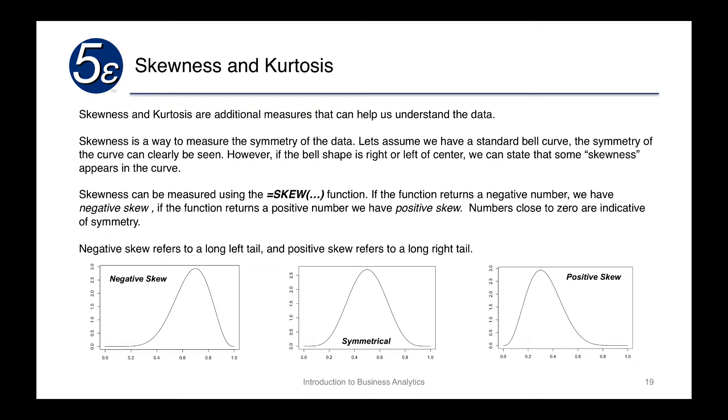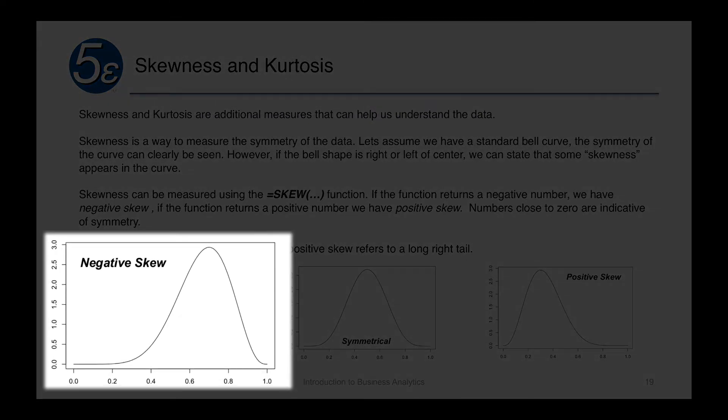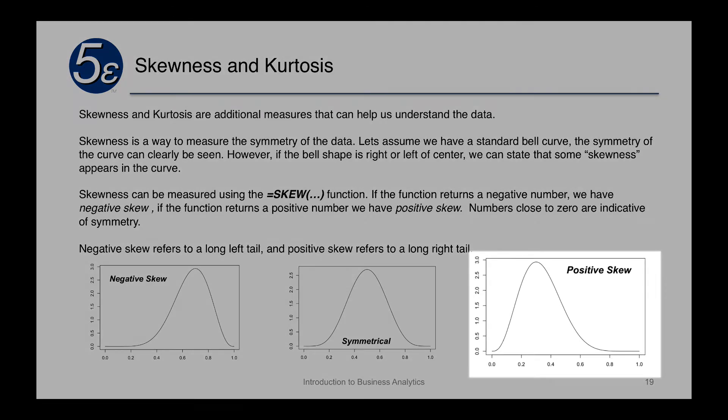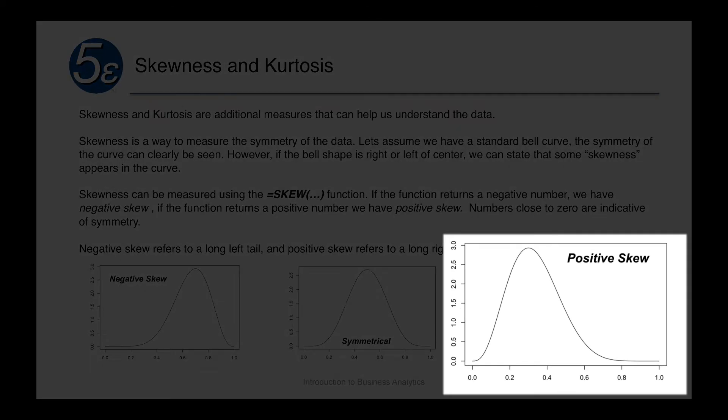So a negative skew is the one on the left, and it refers to a long left tail. So when we say negative skew, you're looking at where the tail is, the tail will be to the left. And if we're doing a positive skew, the tail will be to the right. That's where the long tail is.